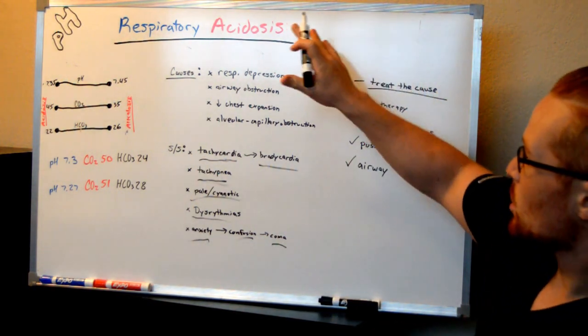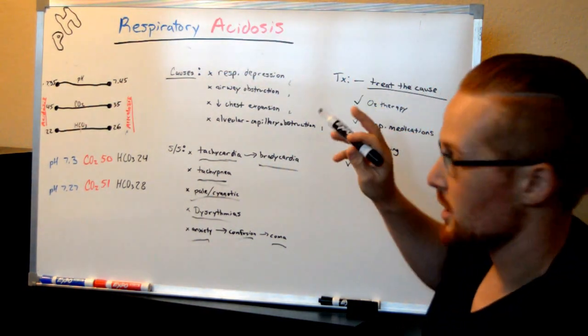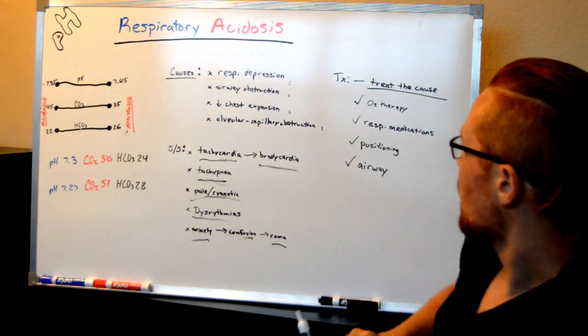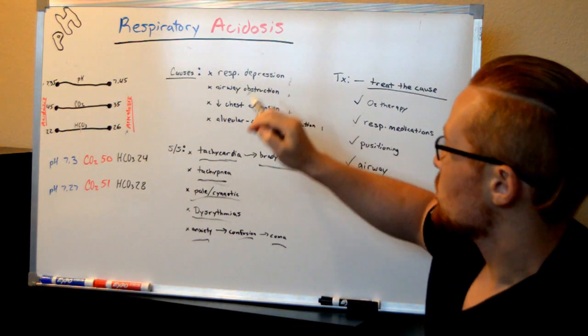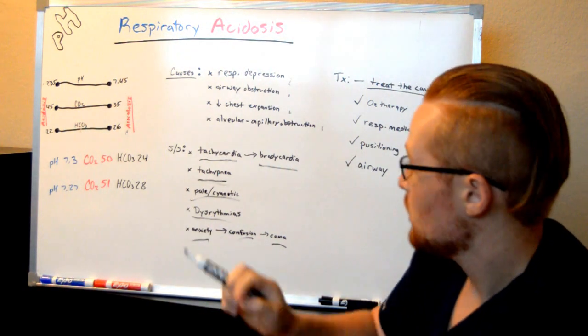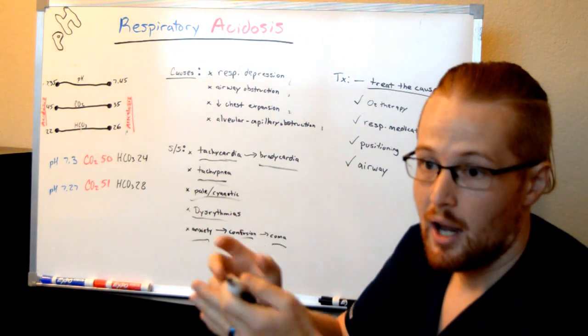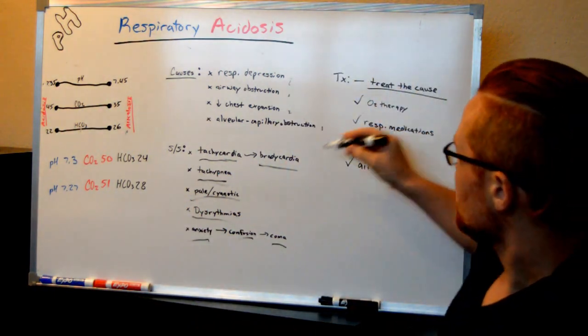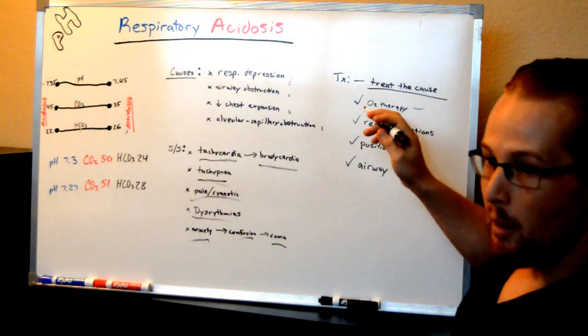So the treatment for respiratory acidosis is you find out which of these is the cause, and you pinpoint that. So if they're having medication overdose, you might need to give them an antidote. If they have a pulmonary embolism, well you need to figure out the solution for that. But for almost any of these, you want to give them oxygen, whether it's nasal cannula or some sort of a mask.